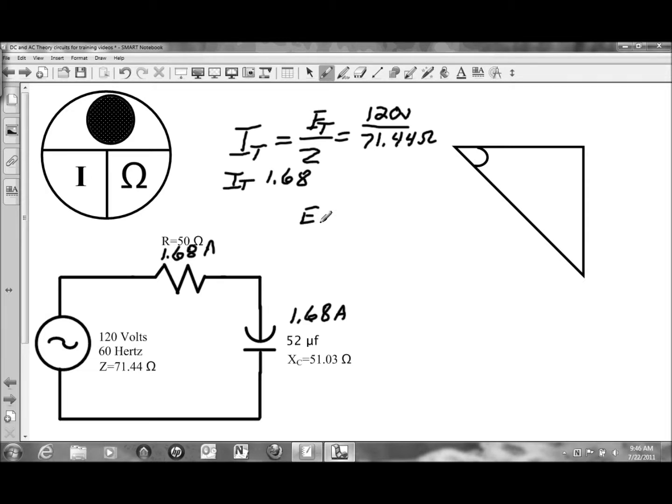ER, or the voltage drop on the resistor, will be the current of 1.68 amps times the value of resistance of 50 ohms. And that will give us a voltage drop on the resistor of 84 volts.